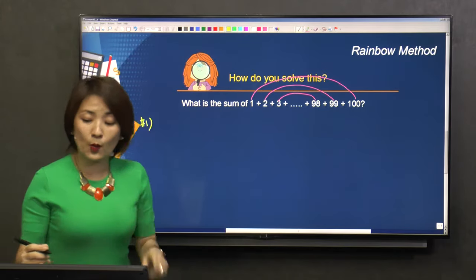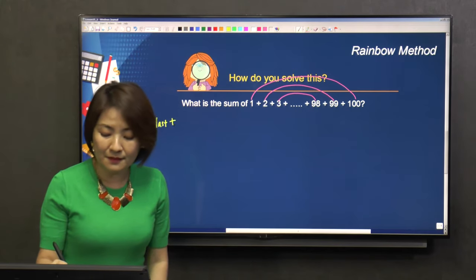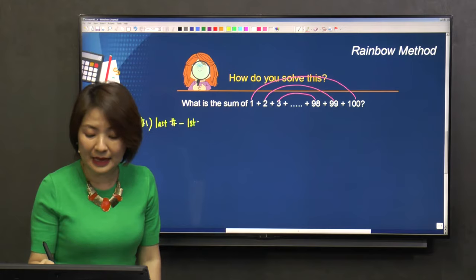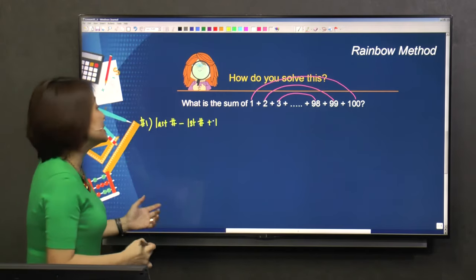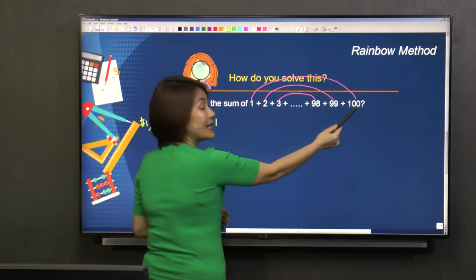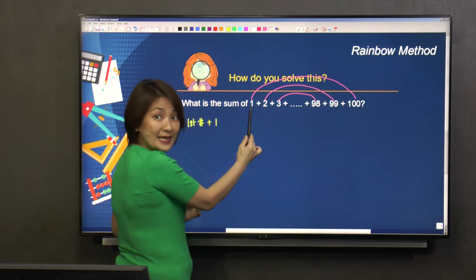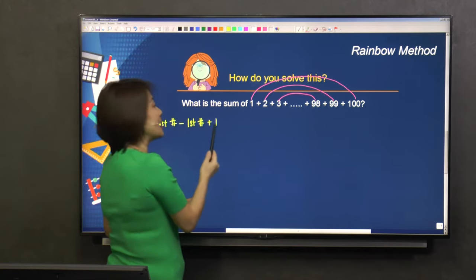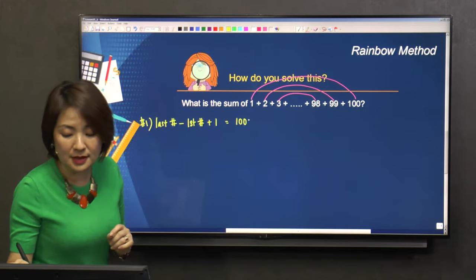So this is the way to do it. I'll take the last number minus the first number, and then plus 1. Simply, last number is 100 minus the first number, which is 1—you get 99. 99 + 1, you get 100. So I found out that in this question, I have 100 terms.